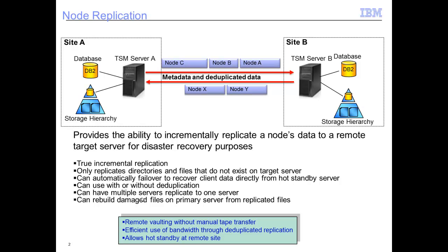Note that I do say recover — we're not going to have the client suddenly start backing up to the target server, just recovering the data from it. We can utilize deduplication and SSL when doing node replication. And if some files on site A were damaged, you can set it up so that it will recover those damaged files from site B — for instance if a tape or drive in the storage pool was damaged, we can recover those files from the copies sent to site B, kind of like a copy storage pool.